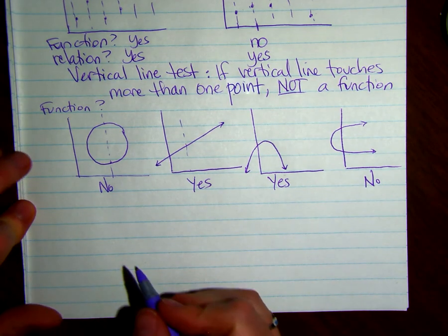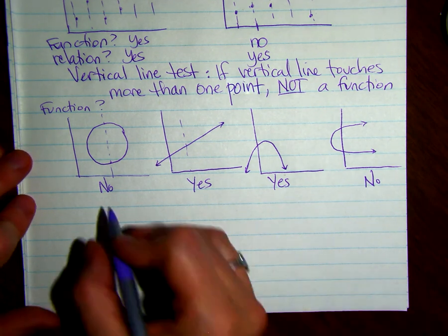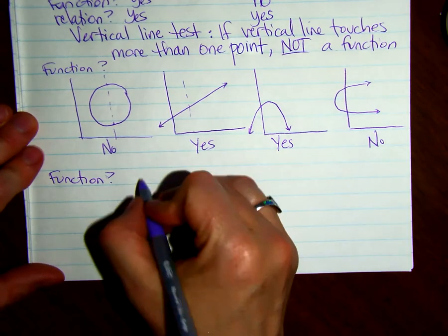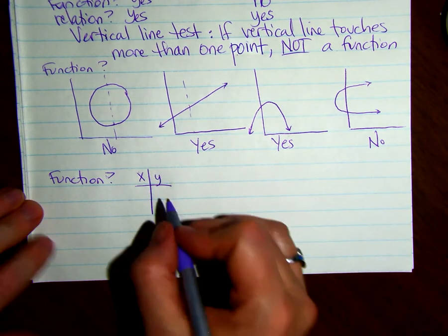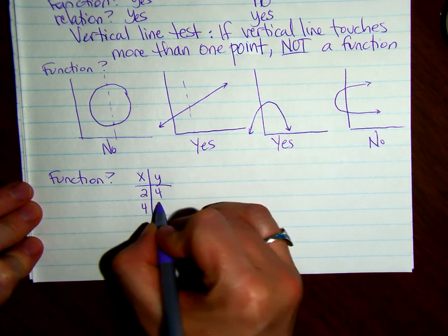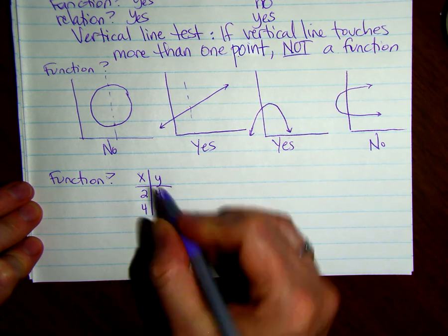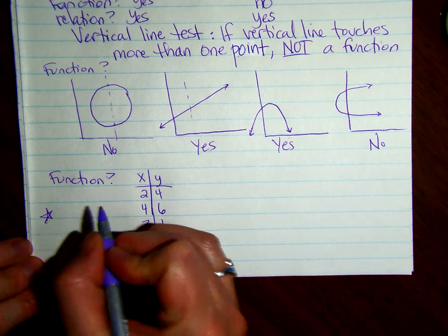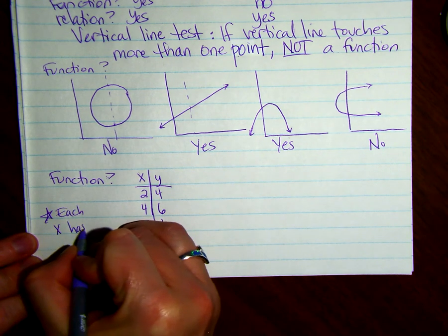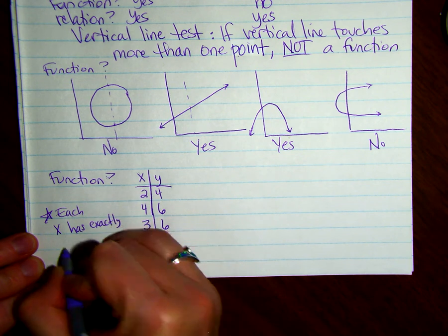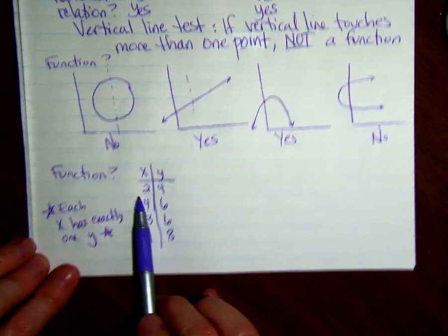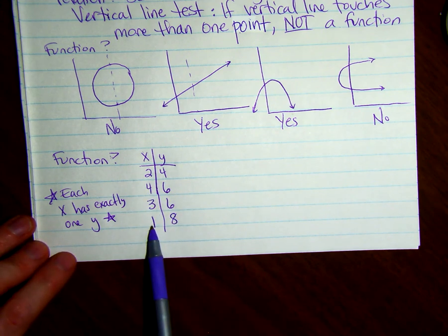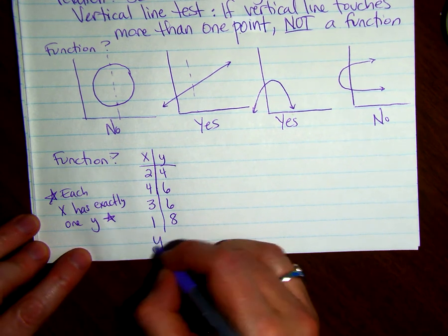Okay, so we might have a table of values. So let's see, are these functions? So we have a table of x, y values: 2, 2, 4, 4, 6, 3, 6, 1, 8. Is this a function? This is what we're going to look for. Remember, each x has exactly one y. Okay, so my x2 has one y, 4 has one y, 3 has one y, and 1 has one y. So yes, this is a function.